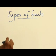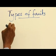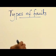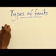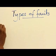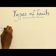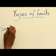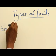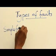When the fruit is formed from a single ovary, it is said to be a simple fruit.